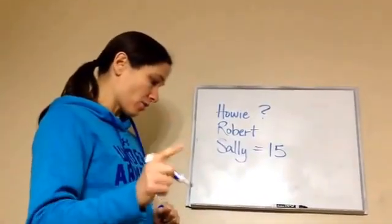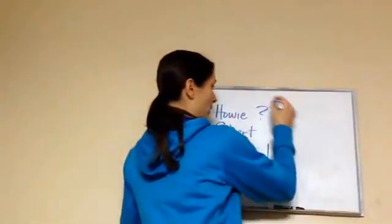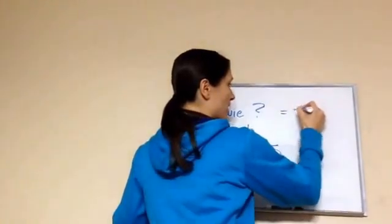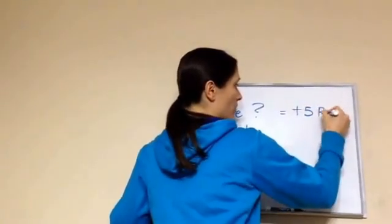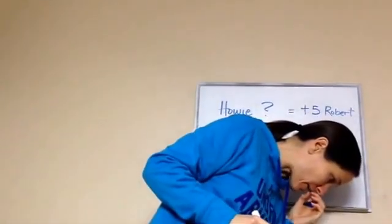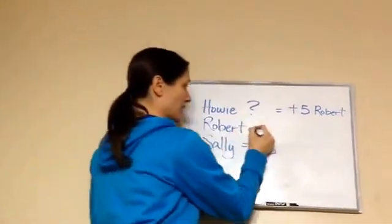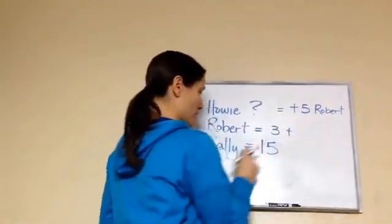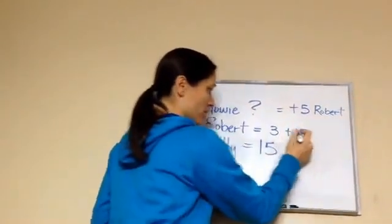Listen to the story. Howie is five years older than Robert, so I'm going to put Howie is plus five Robert. And Robert is three years older than Sally. Robert is three plus Sally's age.